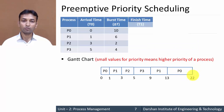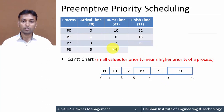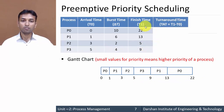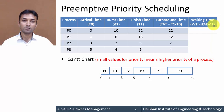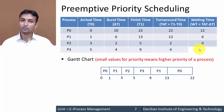Now find out finish time: P0 is twenty-two, P1 is thirteen, P2 is five, P3 is nine. Then find turnaround time, which is finish time minus arrival time: P0 is twenty-two minus zero equals twenty-two; P1 is thirteen minus one equals twelve; P2 is five minus three equals two; P3 is nine minus five equals four. Waiting time is turnaround time minus burst time: P0 is twenty-two minus ten equals twelve; P1 is twelve minus six equals six; P2 is two minus two equals zero; P3 is four minus four equals zero.